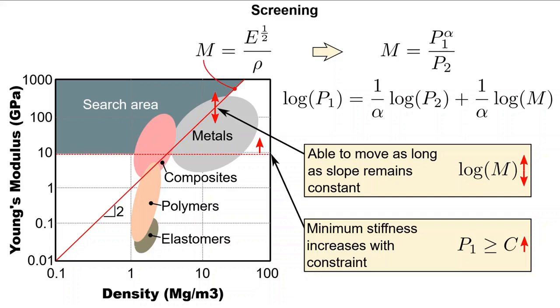The constraint identifies a minimum stiffness and provides a lower bound. However, since the performance index is free to move, it does not identify a material with a minimum density. This is why we need to rank our materials which appear in our search area.